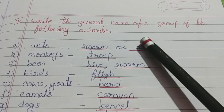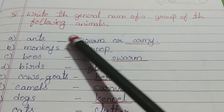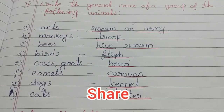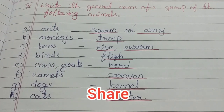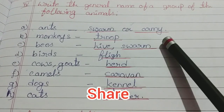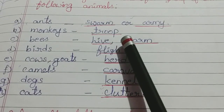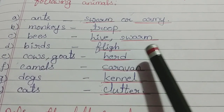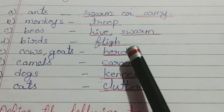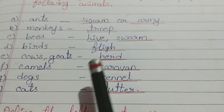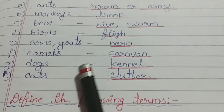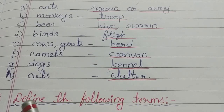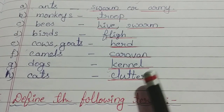Write the general name of a group of the following animals. Ants — swarm or army. Monkeys — troop. Bees — hive or swarm. Birds — flight. Cows or goats — herd. Camels — caravan. Dogs — kennel. Cats — clutch.